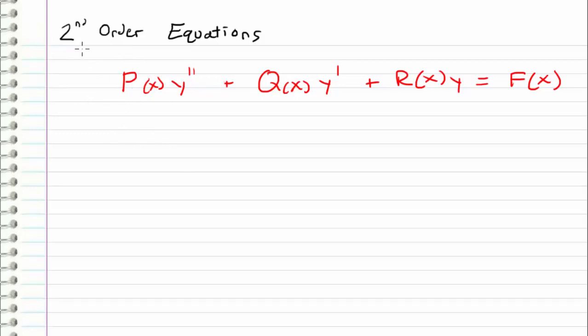So anyway, today we're going to talk about an introduction to second order equations. So a second order linear differential equation is of this general form right here, P(x)y'' + Q(x)y' + R(x)y = F(x). Or in other words, just combinations of the first, second, and zeroth derivative all set equal to some forcing function, F(x). So this is the general form of a second order differential equation.